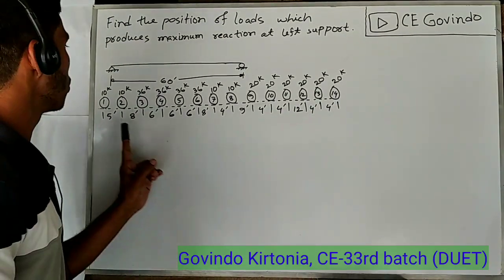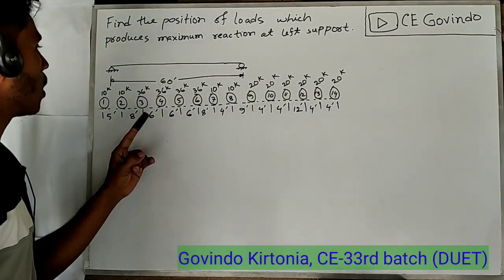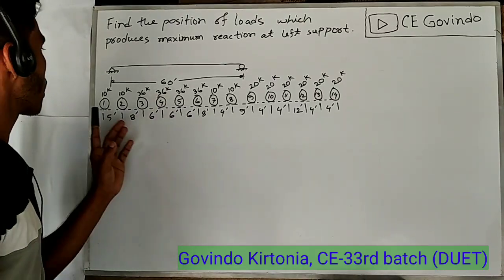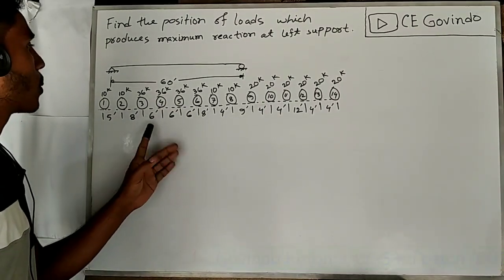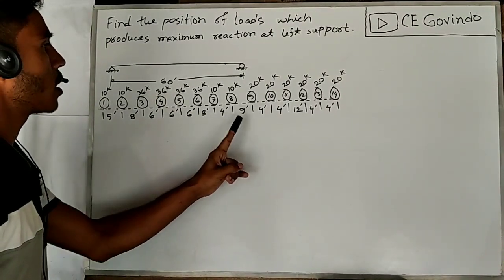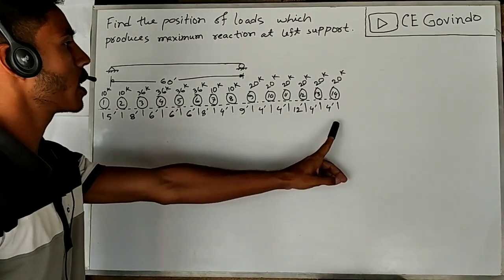The loads given are: 10 kip, 36 kip, 10 kip, and 20 kip.